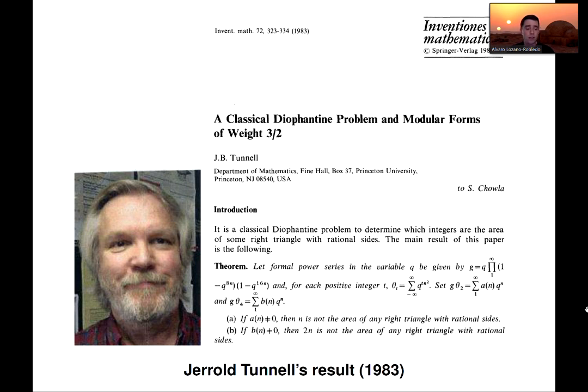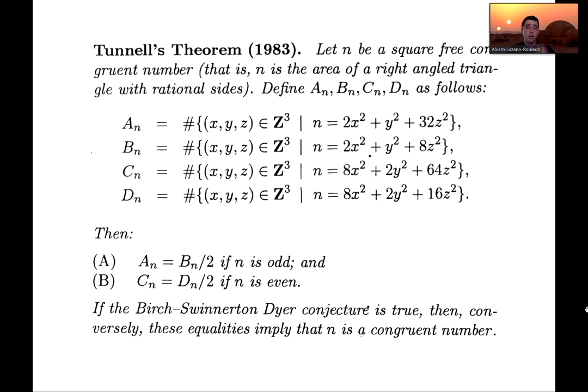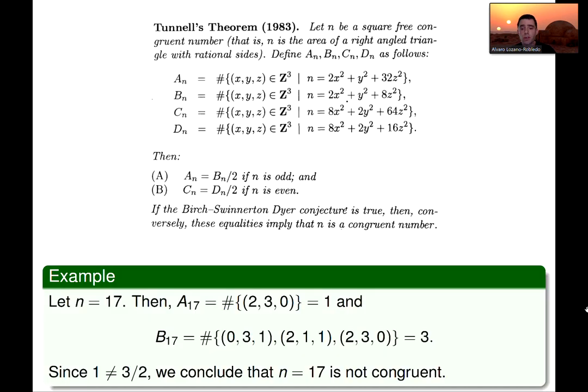Tunnell, for example, in 1983, gave a criterion. I'm not going to read it out loud, but here it is. That tells you what happens if n is a congruent number, then some equalities need to happen of two finite numbers. And in fact, if the Birch and Swinnerton-Dyer conjecture is true, then this is an if and only if statement, and it would give you a characterization of what numbers are congruent, which is awesome, except that the Birch and Swinnerton-Dyer conjecture, by the way, here's an example of Tunnell's theorem in practice.